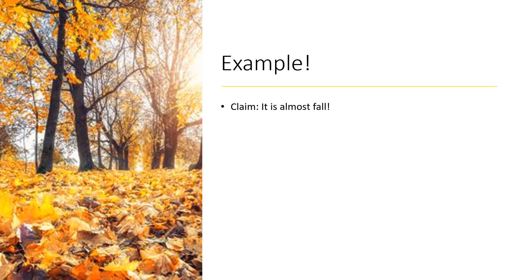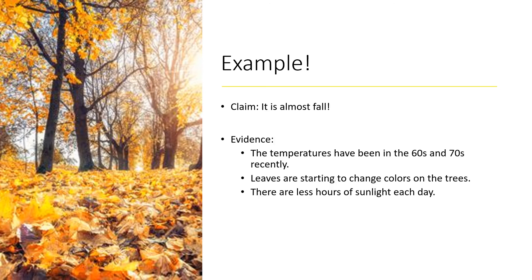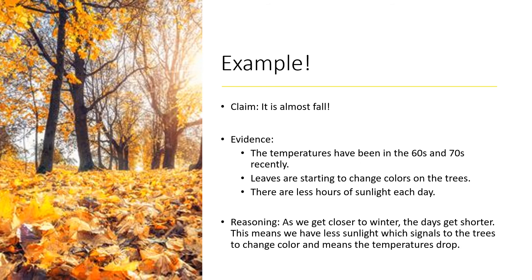Let's go over an example. My claim is: it is almost fall. That's the statement I am making that I believe is true. My evidence is that temperatures have been in the 60s and 70s recently, the leaves are starting to change colors on the trees, and there are fewer hours of sunlight each day. My reasoning explains how the evidence supports the claim: as we get closer to winter, the days get shorter, which means less sunlight — this signals to the trees to change color and also means that temperatures are dropping. So my reasoning is the science I know about seasons, my evidence is what I observe, and my claim is my statement I believe is true.